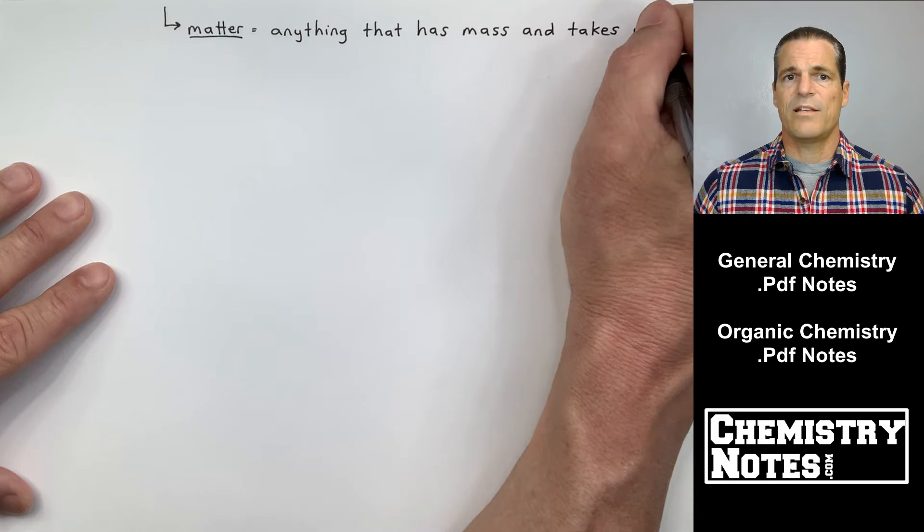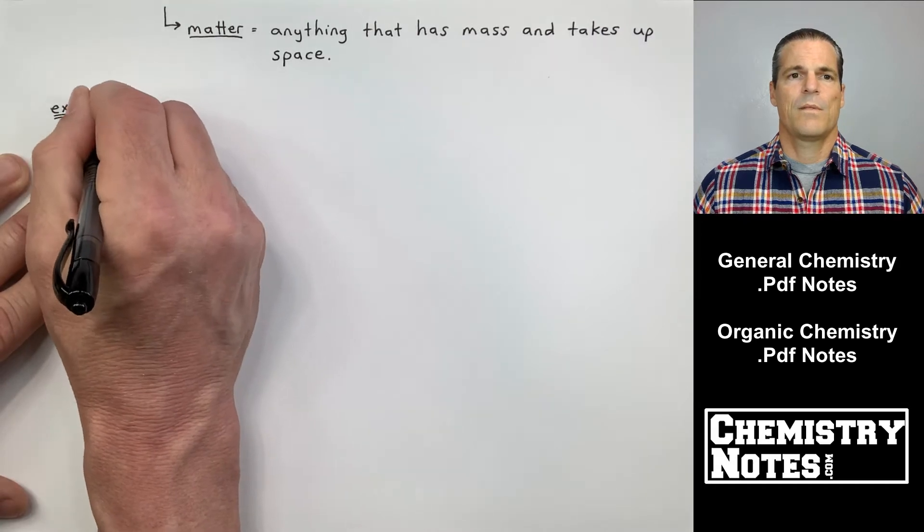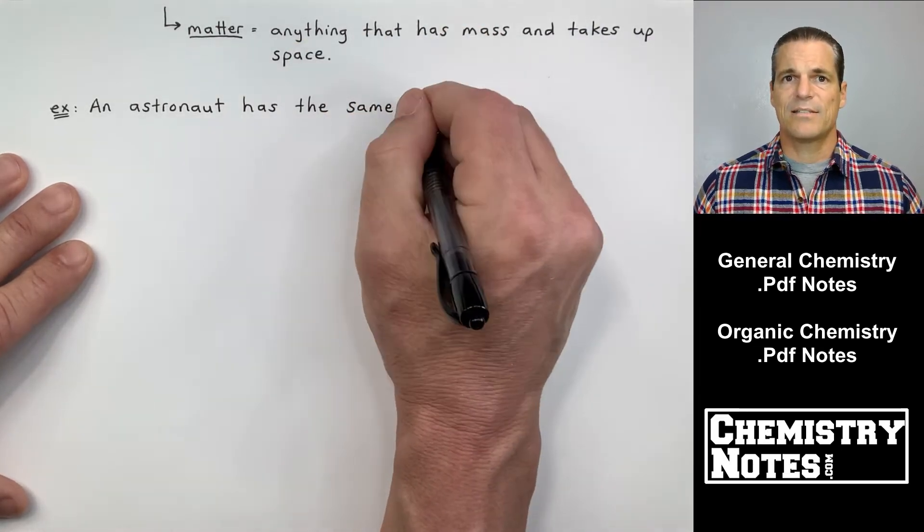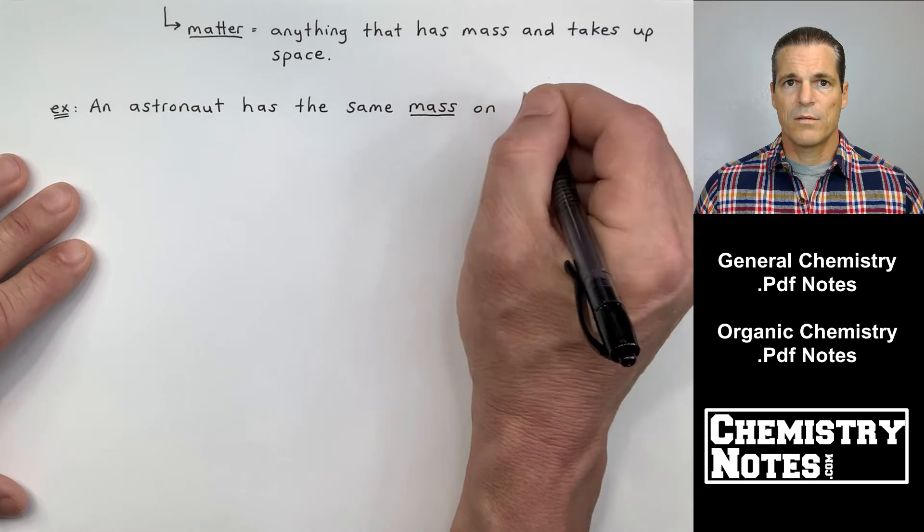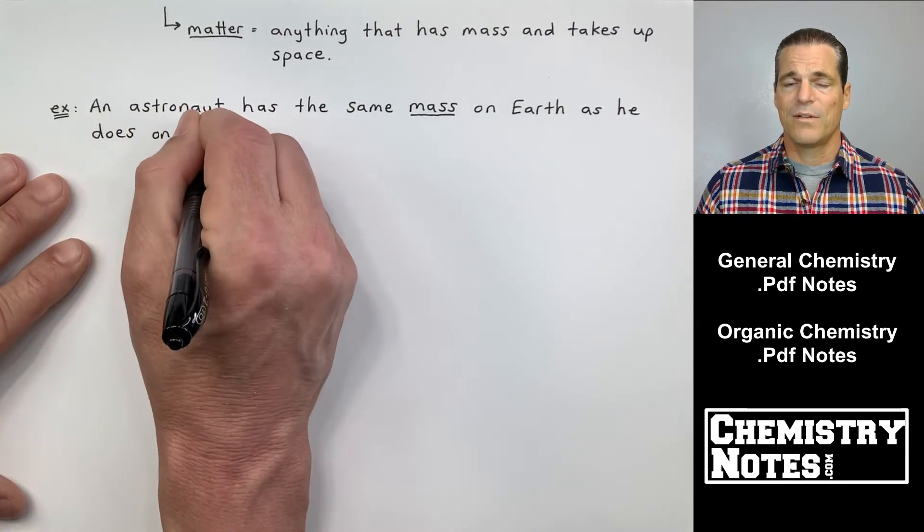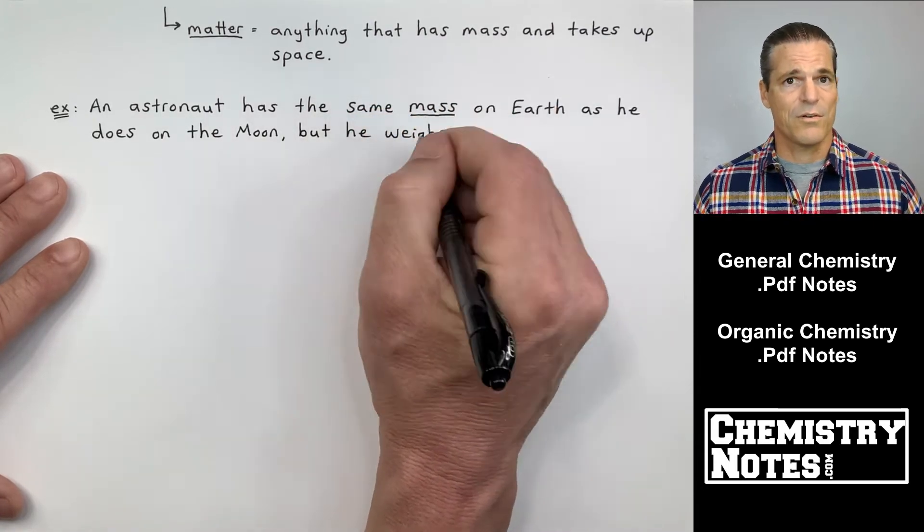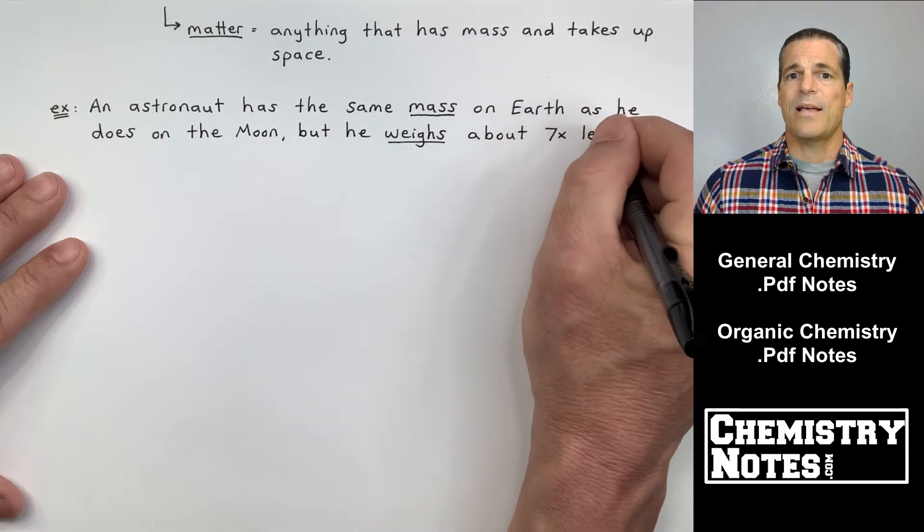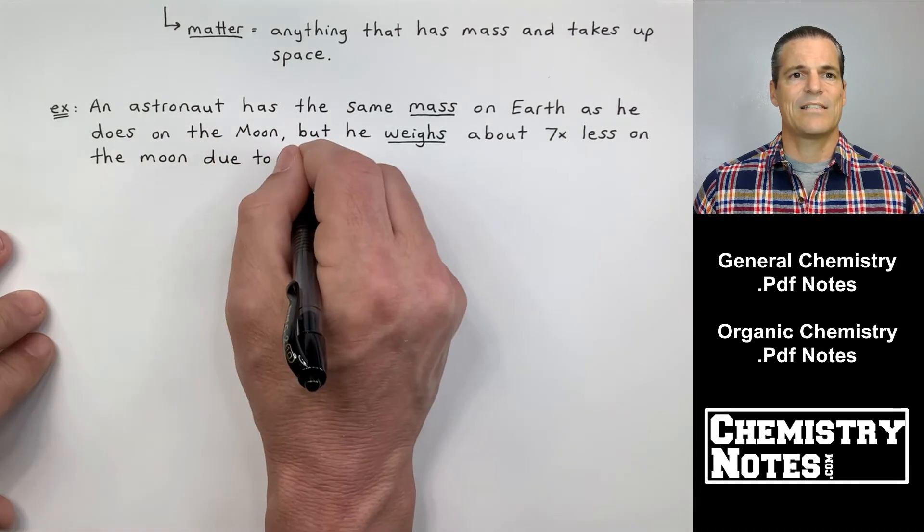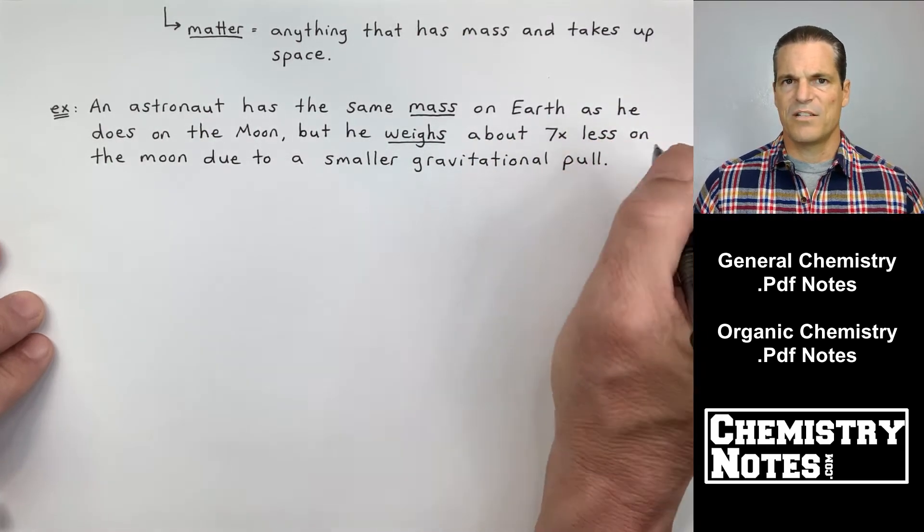Like your weight on the moon is different than your weight here on earth because weight is defined as the force that gravity exerts on an object. And the gravity is determined by how large the earth is or how large the moon is. Gravitational pull depends on the size of the planet. Now, another definition tucked in there is matter. Matter is anything that has mass and takes up space. Here is a quick example on this. I don't want to spend too much time on mass versus weight. Just realize that mass doesn't change wherever you are, but your weight does.